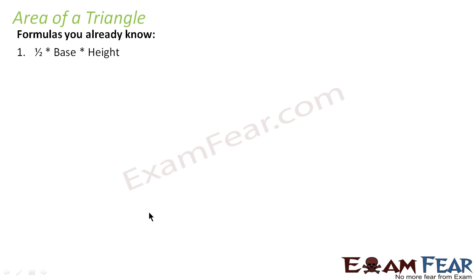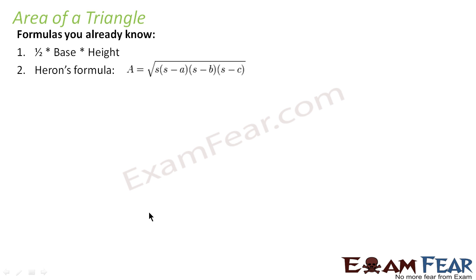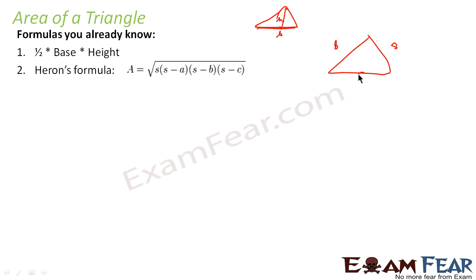Areas of triangle — there are a lot of formulas to find the area of a triangle. One formula you must know is 1/2 into base into height. The other formula is Heron's formula: s(s−a)(s−b)(s−c), where s is the semi-perimeter, that is (a+b+c)/2.